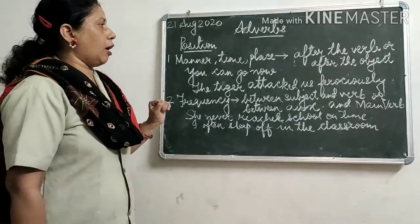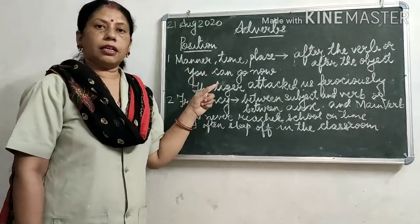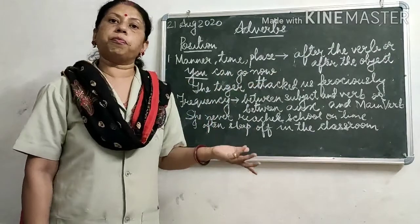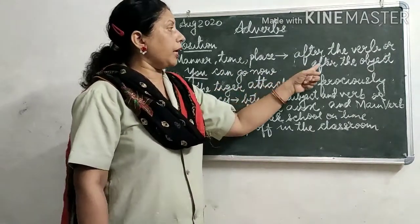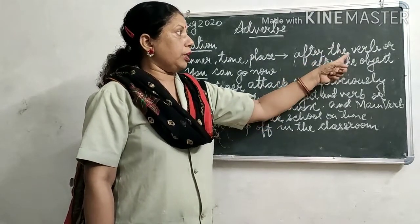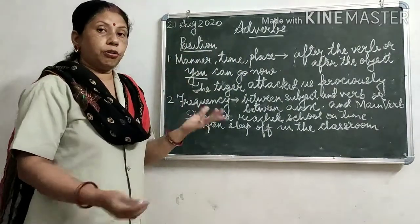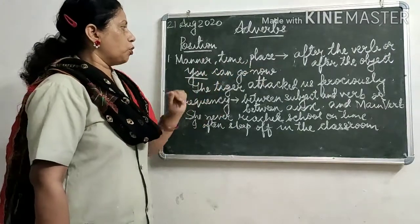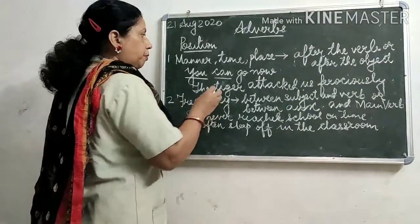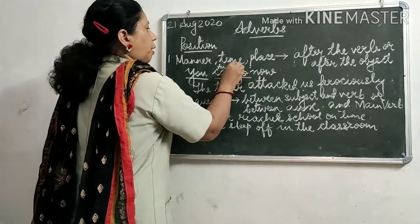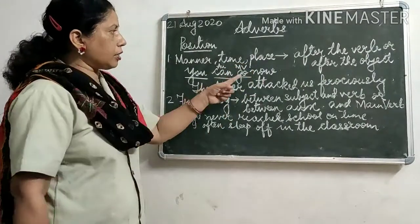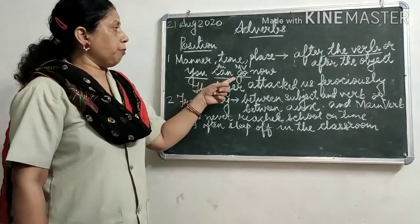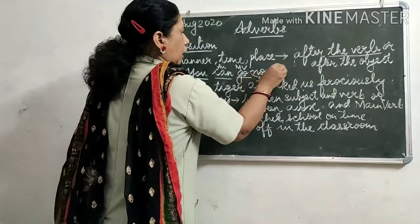In the example 'You can go now,' the subject is 'you' and there is no object. 'Can' is the auxiliary verb and 'go' is the main verb. Since there is no object, we place the adverb 'now' directly after the main verb.